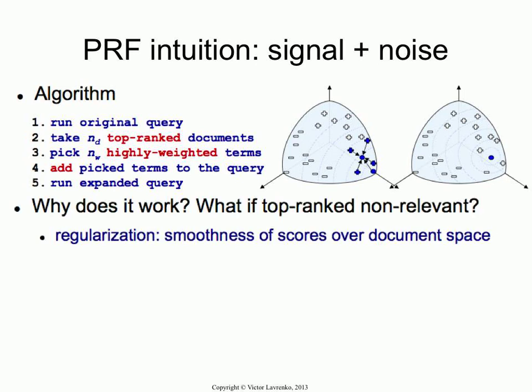So why does it work? It seems like you're doing something horrible. You are assuming that the top-ranked results are all relevant, and they will contain non-relevant results — there's no question about that. So you always get non-relevant results mixed with relevant results at the top of the ranking. So why does it work? And by the way, empirically, it does. It's one of the most effective techniques in information retrieval.